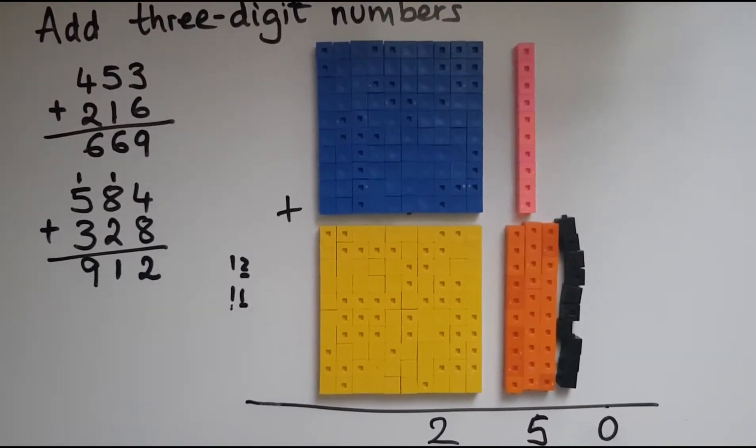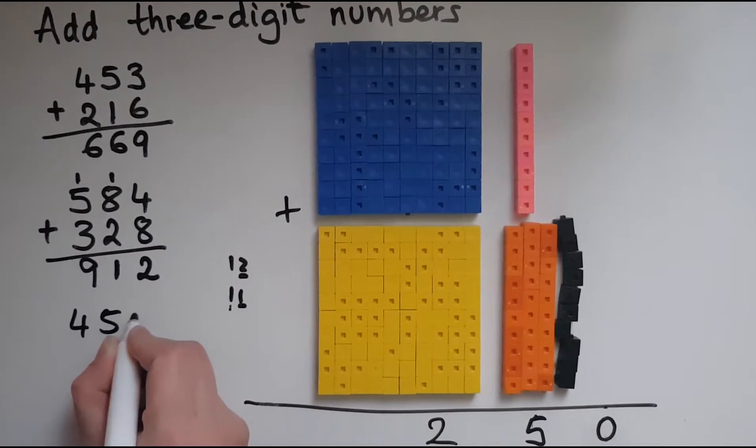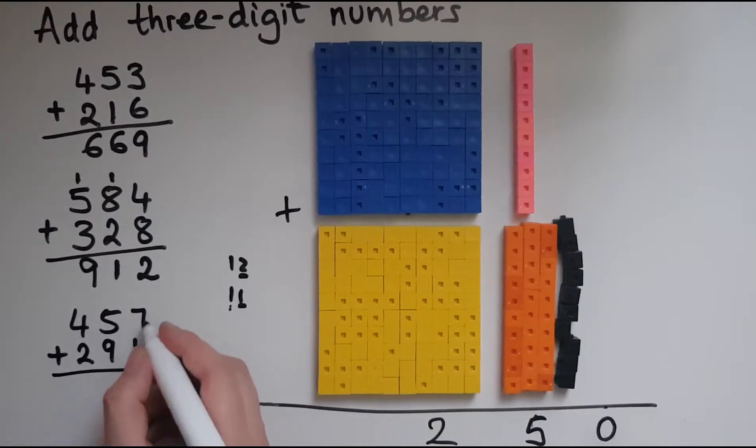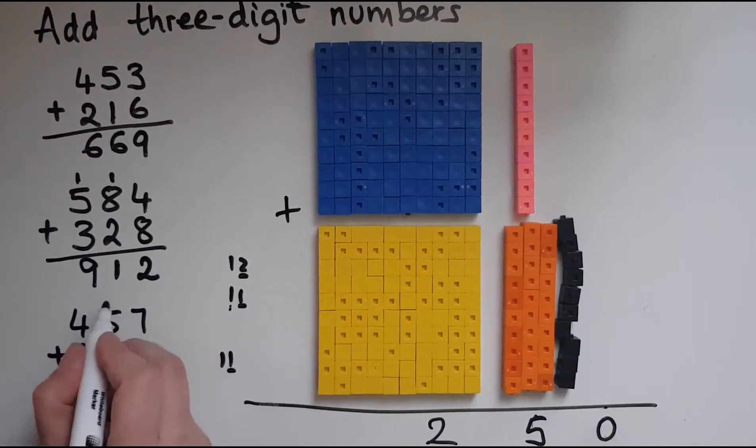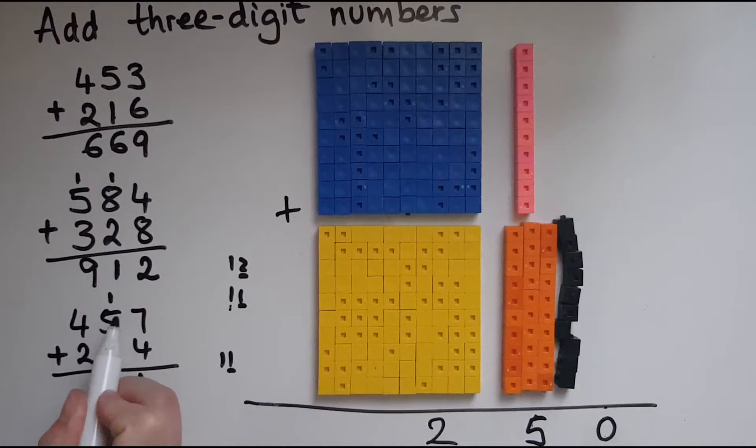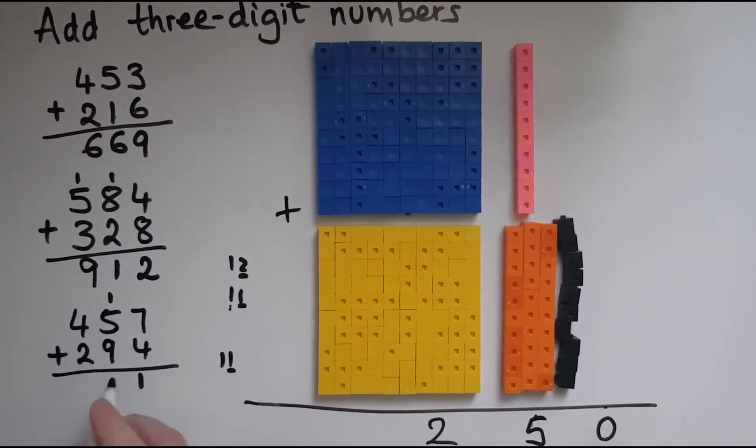We'll now look at another example. So if we have 457, we'll add to it 294. So seven and four makes 11. So I'll write the units down, transfer the tens over to the tens. So we've got one and nine makes 10 and the five makes 15. So we've got the five of the units down. We transfer those tens over. So one and four makes five and the two makes seven. So that makes 751. The method that I've just used to go through these is called the column method.